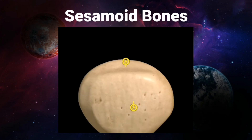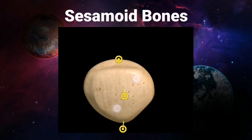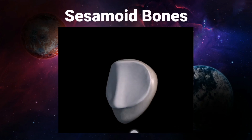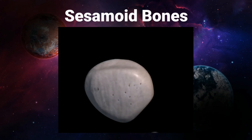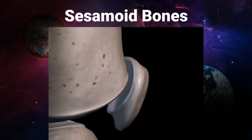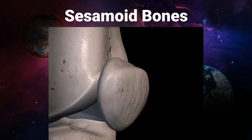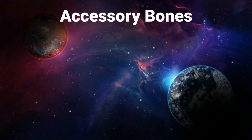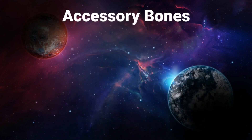Sesamoid bones are bone nodules found embedded in the tendons or joint capsules. They have no periosteum — periosteum being a layer present on the outside of a bone. Sesamoid bones do not have this periosteum.